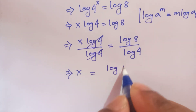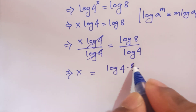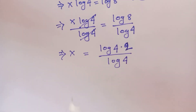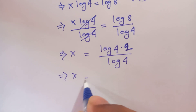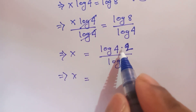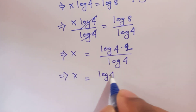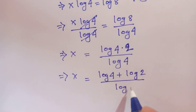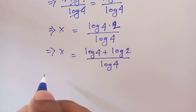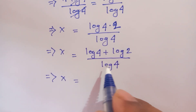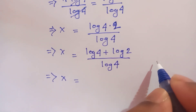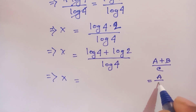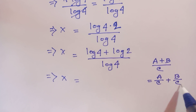Now log of 8 can be written as log of (4 times 2) over log of 4. So x is equal to log of (4 times 2) which can be written as log of 4 plus log of 2, all divided by log of 4. We can break this numerator using the rule (a plus b) over c equals a over c plus b over c.